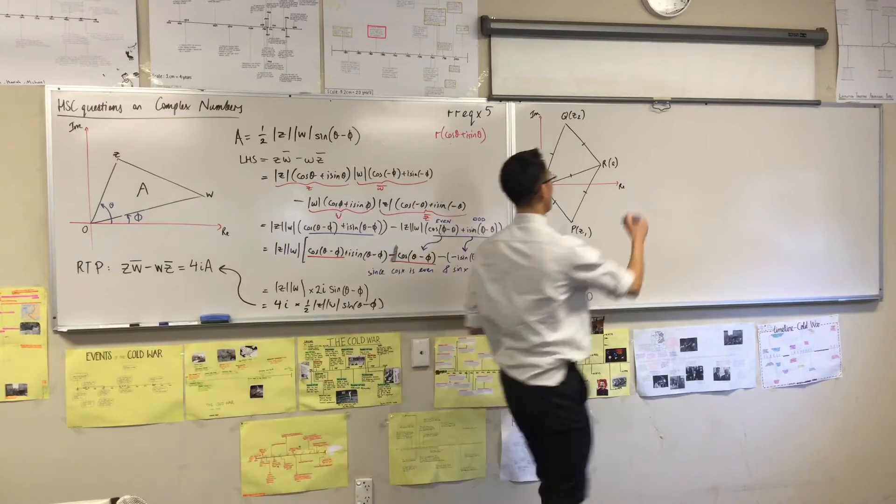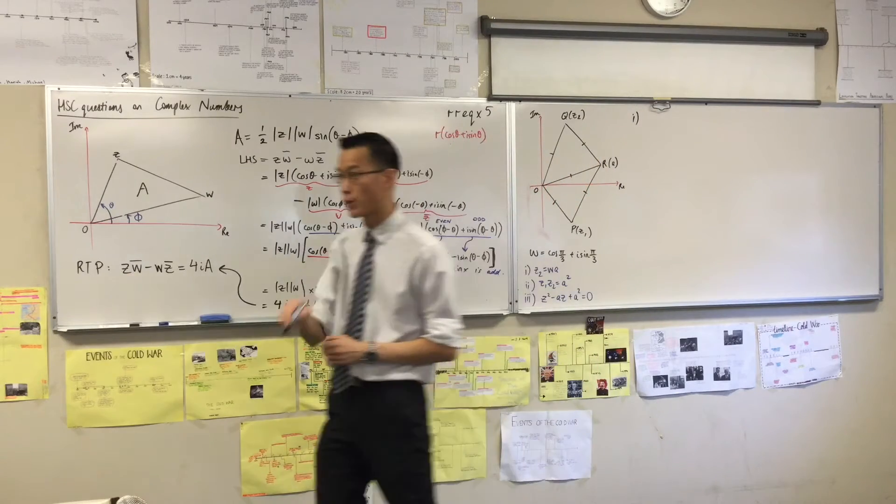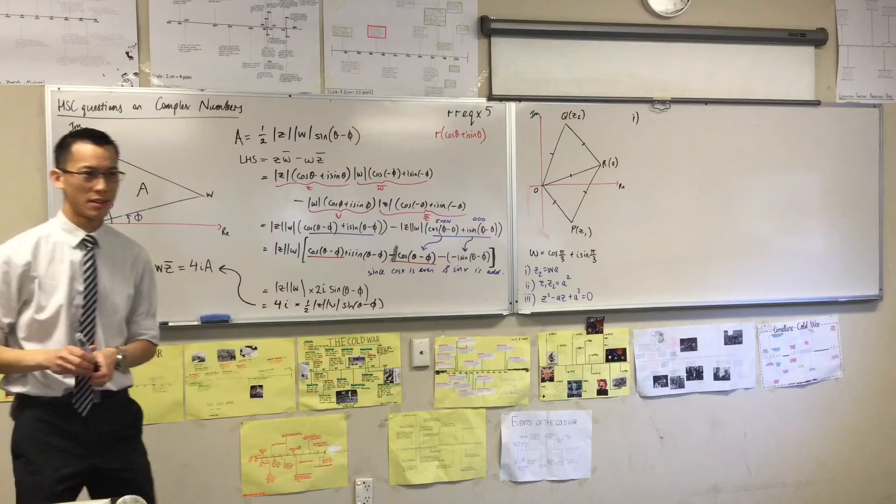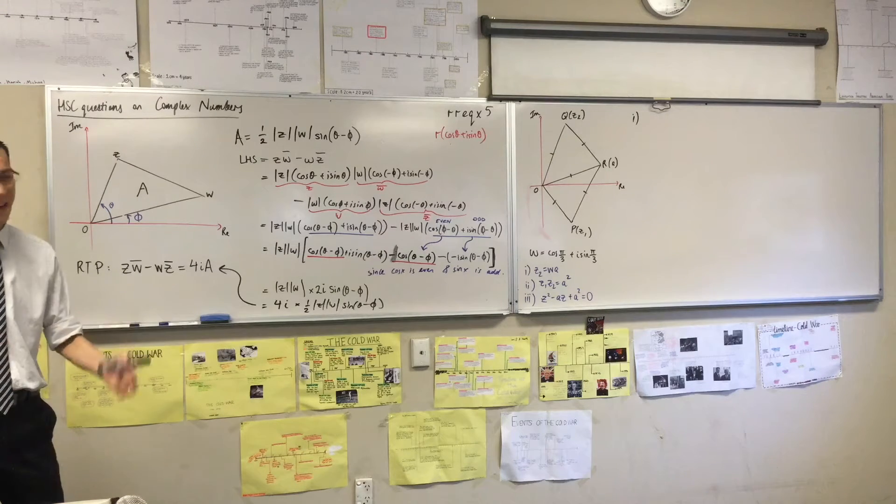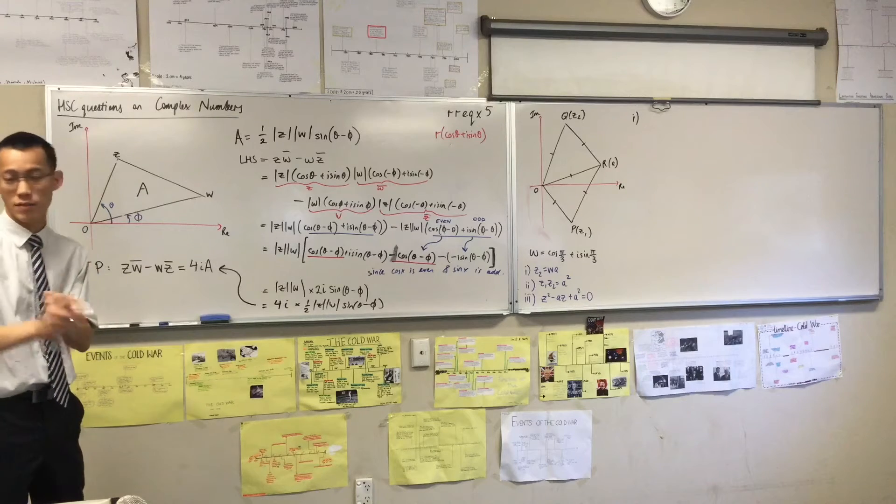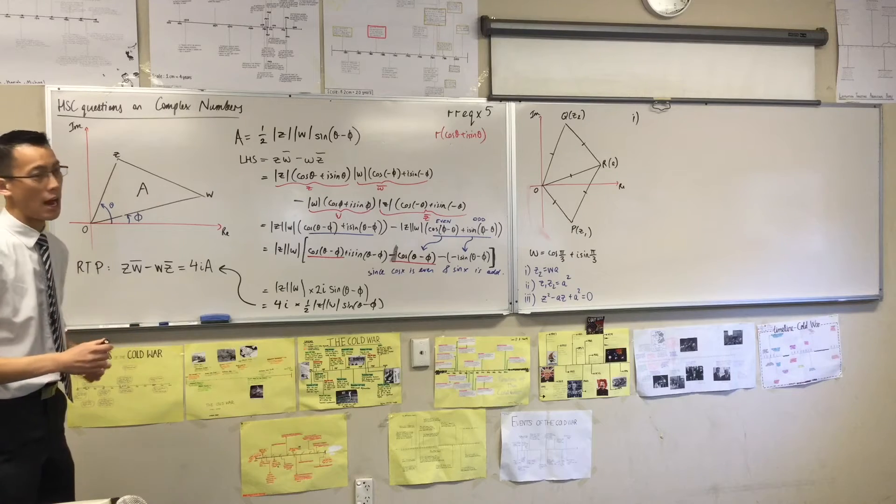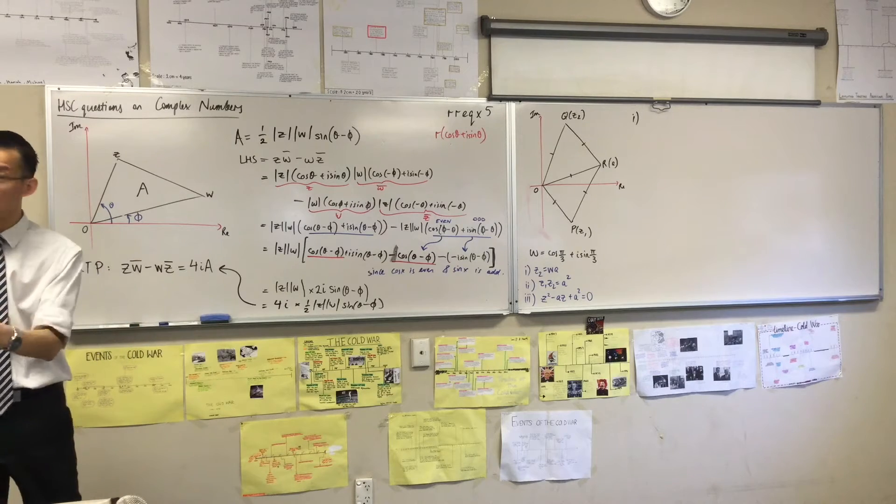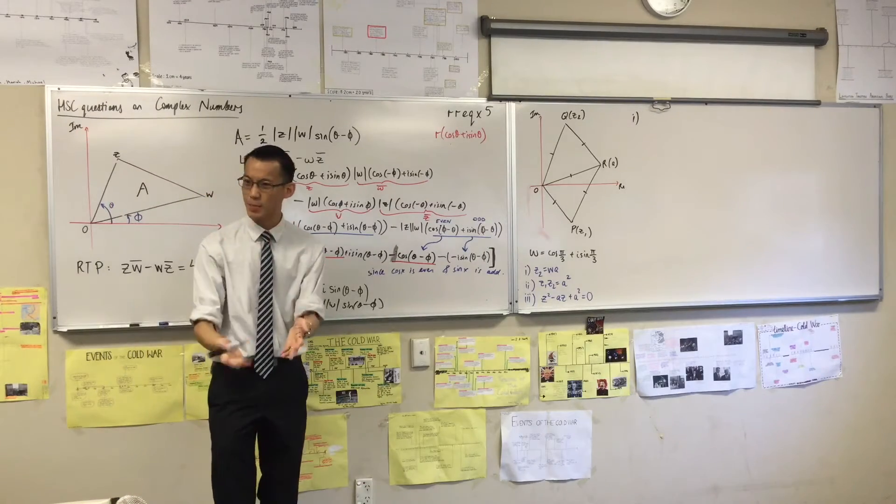The key thing with part one is that the verb of the question—what do they ask you to do? Explain. We hardly ever ask you to explain in a mathematics exam. So you've got to use some words here. You must use words. If there are no words in what you've written for part one, I'm doubtful that you would get a mark, even if there are lots of right things in your solution to part one.